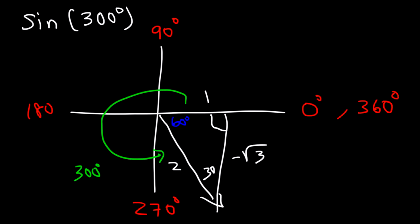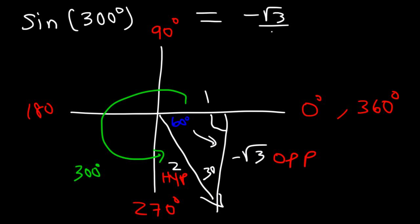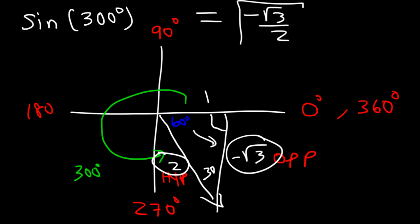Now we can find the value of sine of 300 using that right triangle. 300 is associated with a reference angle of 60. Using the fact that sine is opposite over hypotenuse (SOH CAH TOA), sine of 300 is negative √3 divided by 2.